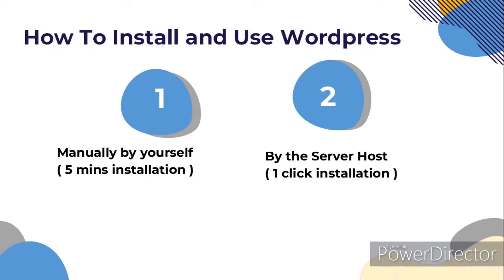WordPress can be installed in two ways. The first way is manually, which you do yourself, and this can take up to five minutes for the installation. The second is by the server host — it's just a one-click installation done inside the cPanel of the web server. This can only be accessed when you buy a hosting plan from a server host.